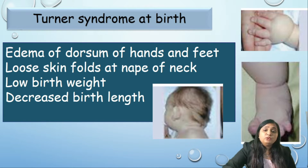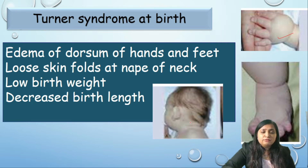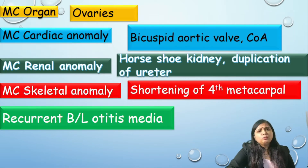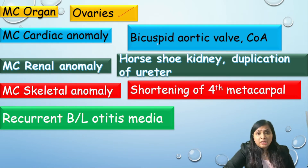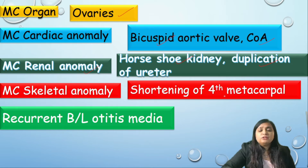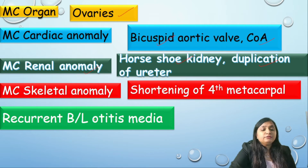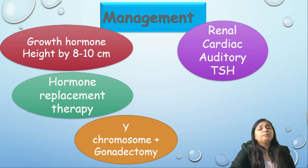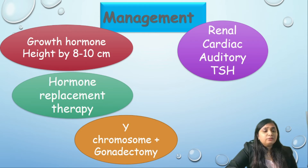How does a baby with Turner syndrome present at birth? There could be unexplained edema of the dorsum of the hands and feet, loose skin folds at the nape of the neck, low birth weight, and decreased birth length. Summary: the most commonly involved organ is ovaries; most common cardiac anomaly is first bicuspid aortic valve then coarctation of the aorta; most common renal anomaly is horseshoe kidney or duplication of ureter; most common skeletal anomaly is shortening of the fourth metacarpal and metatarsal. There can also be recurrent bilateral otitis media.